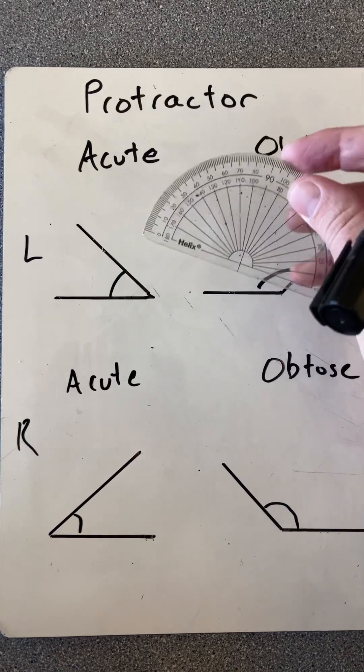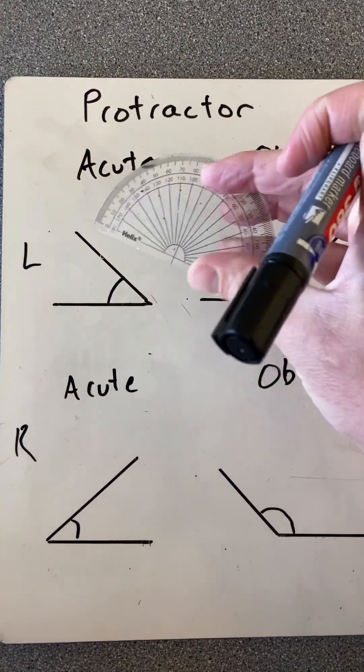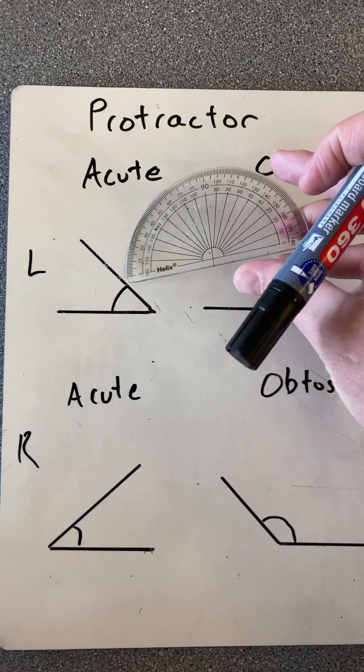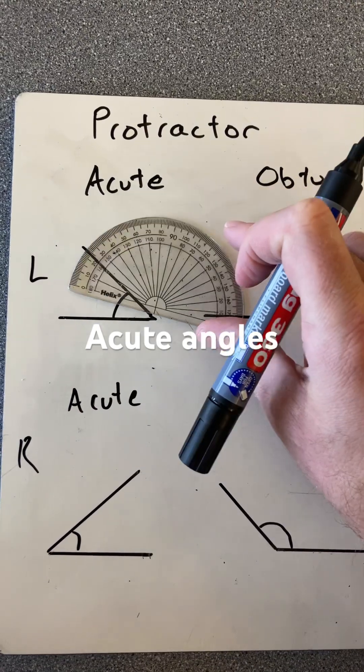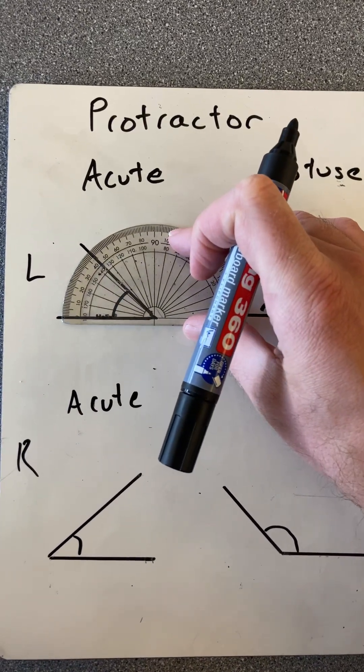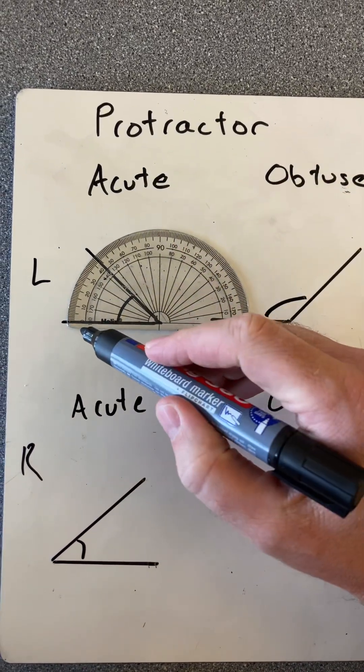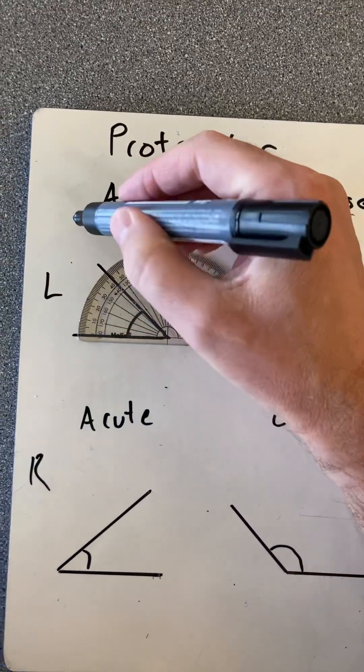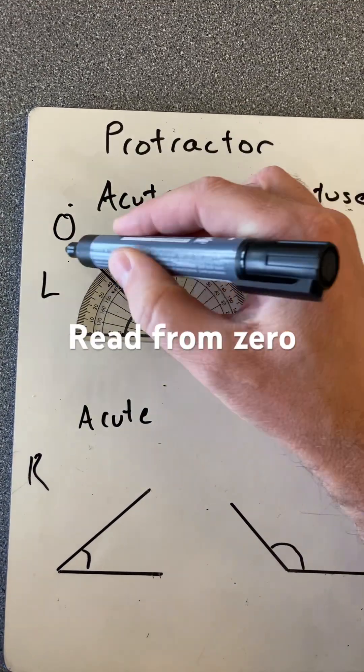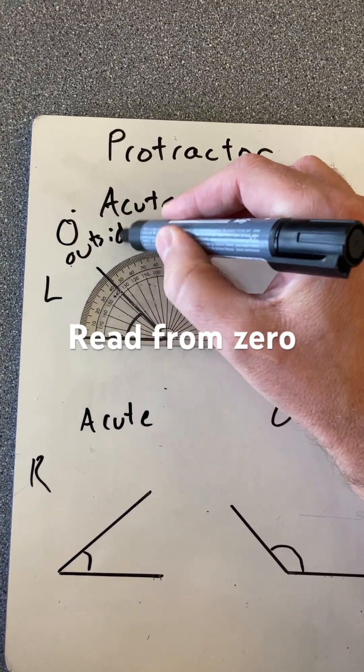So I'm going to start with looking at an acute angle where the angle opens on the left-hand side. So that means to read the protractor, when I place it flat on that line with the cross where the lines meet, I'm going to read on the outside, always read from zero degrees, in this case on the outside.